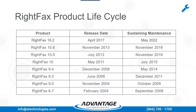This is the RightFax product lifecycle grid. As you can see from the support schedule, RightFax 10.6 will still be fully supported until November 2018. If you are running a version in sustaining maintenance — which would be 10.5 or earlier — we should talk about getting you upgraded to a fully supported version. Even if you are on RightFax 10.6, now would be a good time to start planning your upgrade to 16.2.